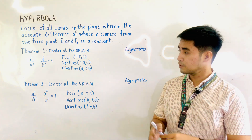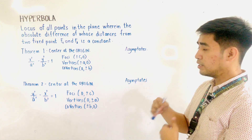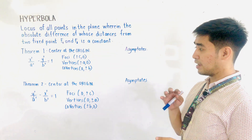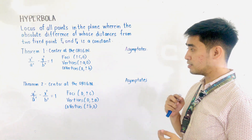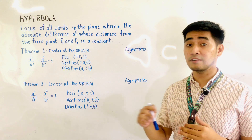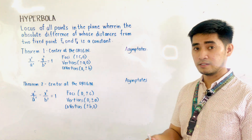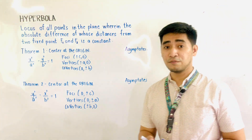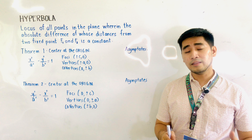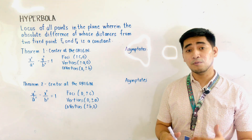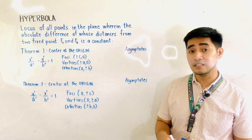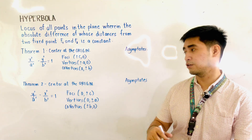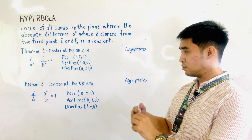So, how do we now get the coordinates of the foci, the vertices, and the co-vertices if we are given different theorems? But before that, let us first identify what axis will be the transverse axis using these theorems.